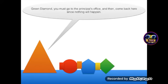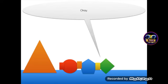I got a yellow card. Green Diamond, you must go to the principal's office and then come back here, since nothing will happen. Okay.